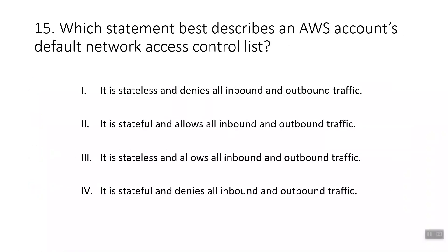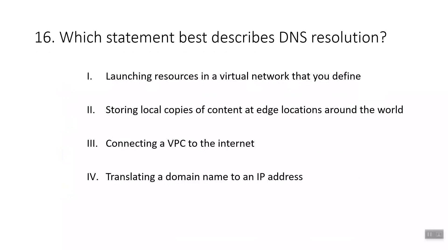The fifteenth question: which statement best describes an AWS account's default network access control list? The correct answer is it is stateless and allows all inbound and outbound traffic. Network access control lists (ACLs) perform stateless packet filtering.